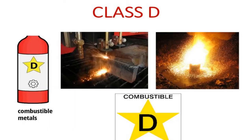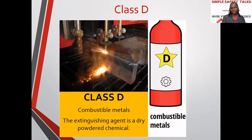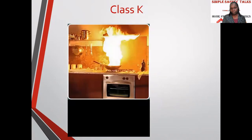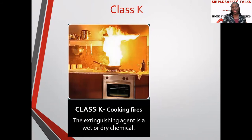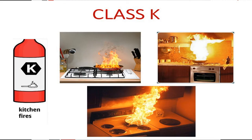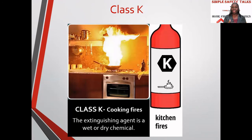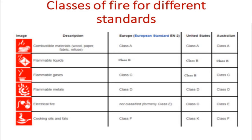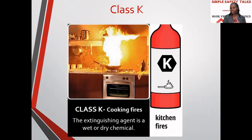For Class D, which are combustible metals, the extinguishing agent is dry chemical powder. For Class K — cooking fires such as cooking oil, animal fat, and vegetable oil — the extinguishing agent is wet or dry chemical. Note that in some schools of thought, Class C refers to flammable gases, Class E refers to electrical fires, and Class F refers to cooking fires. The most important thing is knowing which extinguishing agent is meant for which type of fire.